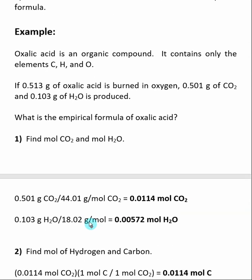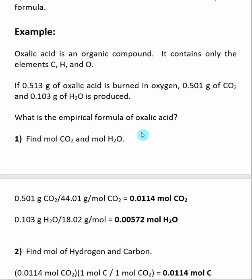Let's look at an example. Oxalic acid is an organic compound known to only contain carbon, hydrogen, and oxygen. We combust 0.513 grams of oxalic acid. When we do this, we're able to capture 0.501 grams of CO2 and 0.103 grams of H2O. We then want to find the empirical formula for oxalic acid.